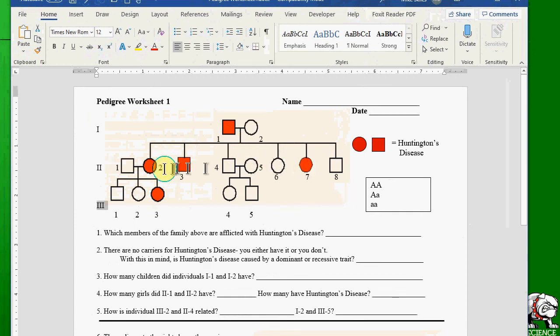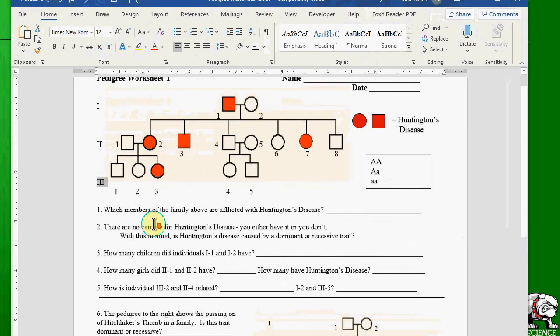The red squares on here, the ones that are shaded in, these represent individuals with Huntington's disease, and then you have several questions to ask about this. One of the questions I want to highlight here is number two. There are no carriers for Huntington's disease. You can have it or you don't have it.